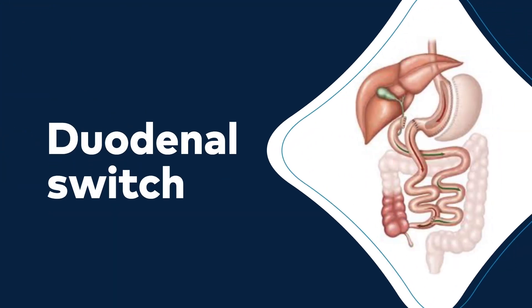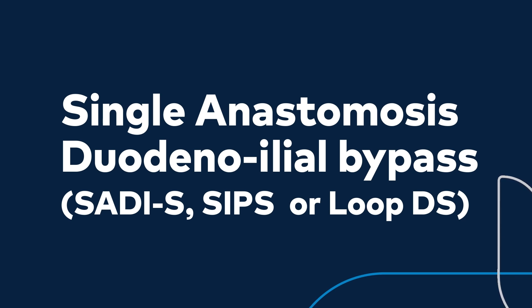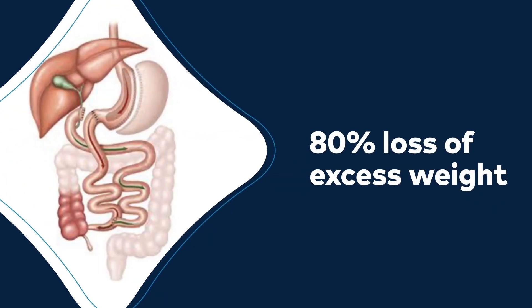Another option is called a duodenal switch. This procedure combines a gastrectomy, the removal of part of the stomach, with an intestinal bypass, which makes the path your food takes through your intestines shorter. This reduces the size of the stomach, as well as how much nutrition your small intestine can absorb from your food. There is a new procedure available, the single anastomosis duodenal-ileal bypass, or SADI-S, also referred to as SIPS or LOOP-DS. This procedure is highly effective for type 2 diabetes treatment. Since it is new, it is not performed by all surgeons. With these duodenal switch procedures, patients typically experience an 80% reduction in their excess weight.